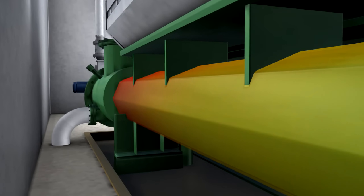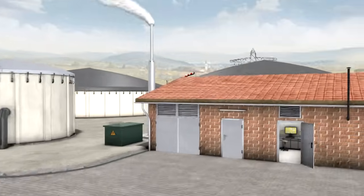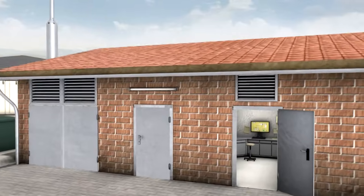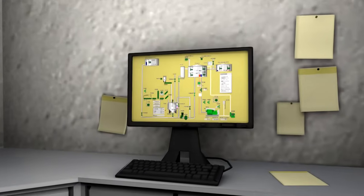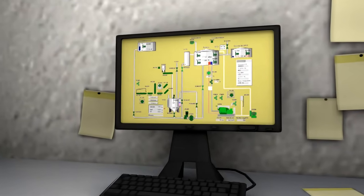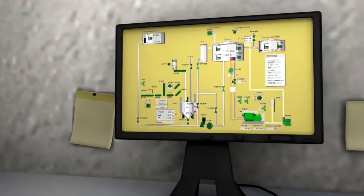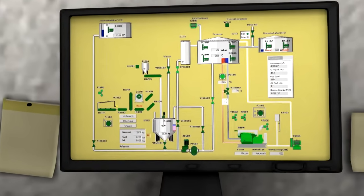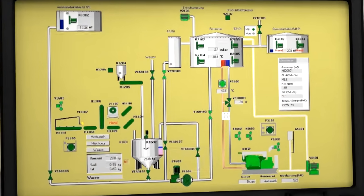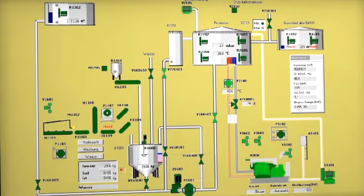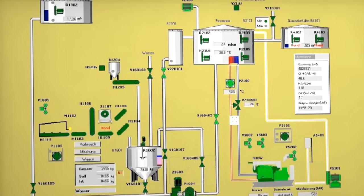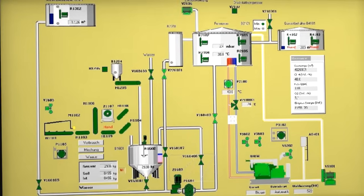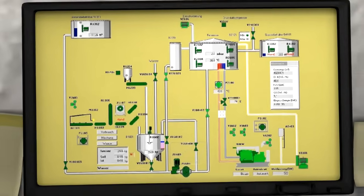The daily feed rate of the input materials, the feed intervals and the agitation time can be entered into the process control system and can be changed and checked at any time. As a result, continuous input control is achieved. Faults in the operating procedure are displayed immediately and can be remedied immediately. In this way, the operator of the biogas plant always has an overview of all important parameters and can react immediately.